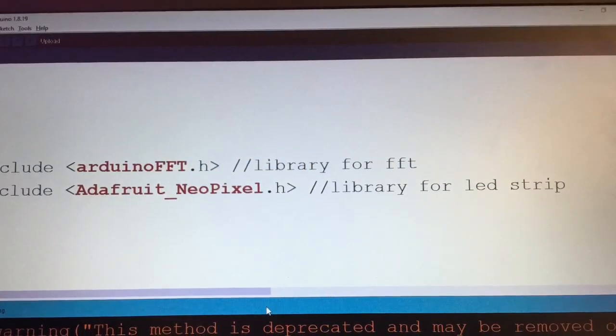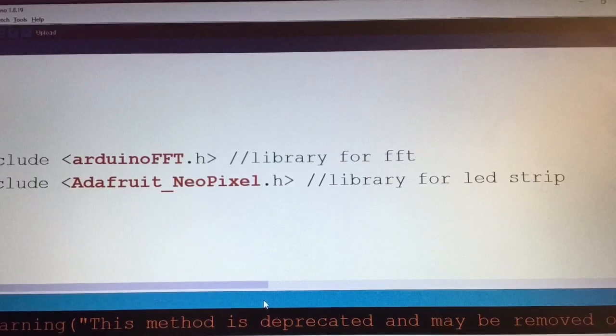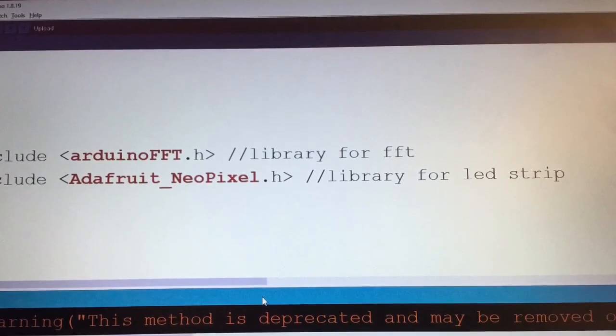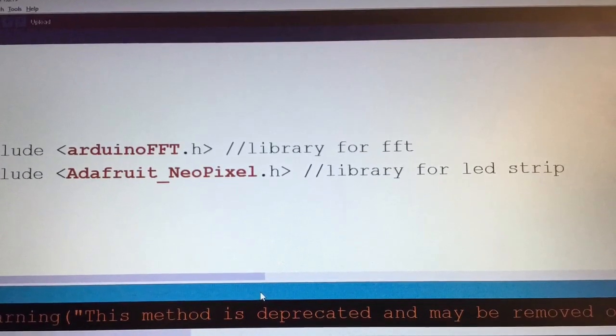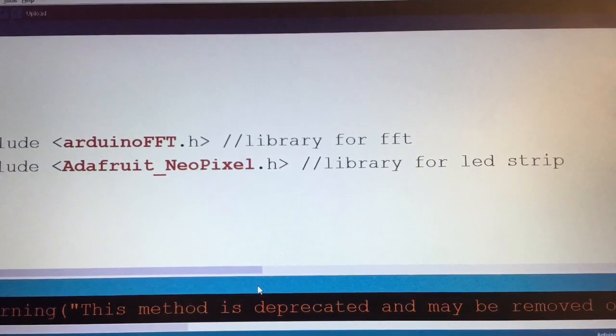To code this project, we had to download two libraries, which are additional code to program more complicated components or algorithms. One for the FFT, and one to code the addressable LED strip. It was relatively simple to put the code in for the Fast Fourier Transform, as we could just look at the other projects online that used it.